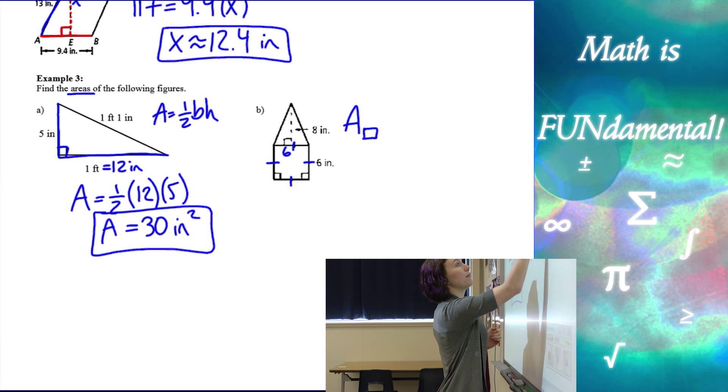So if I find the area of my square, it's going to be six squared, which is 36 inches squared.